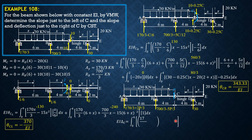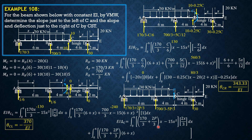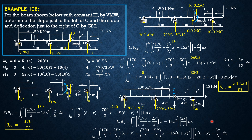Integrating: EI·δ_C equals the integral from 0 to 6 of (170/3 plus 2/3·P)·x minus 15x², with derivative 2/3·x. In the second section, plus the integral from 0 to 4 of [(170/3 plus 2/3·P)·(6+x) plus (700/3 minus 5/3·P)·x minus 15·(6+x)²], with derivatives 2/3·(6+x) and negative 5/3·x. Since the CDE moment equation is not a function of P, its derivative is zero, so those two integrals vanish.